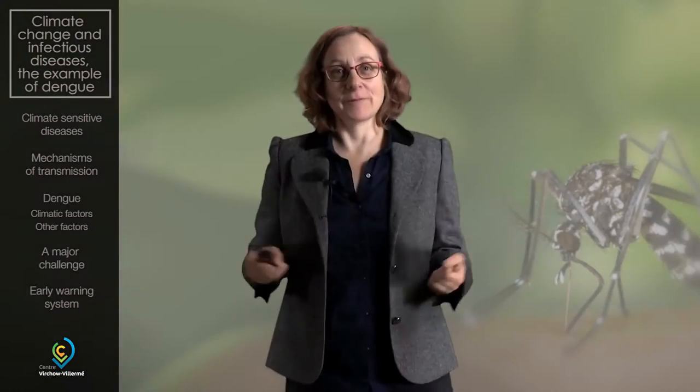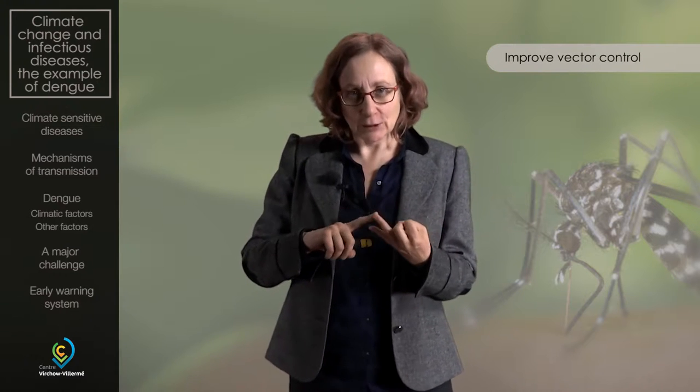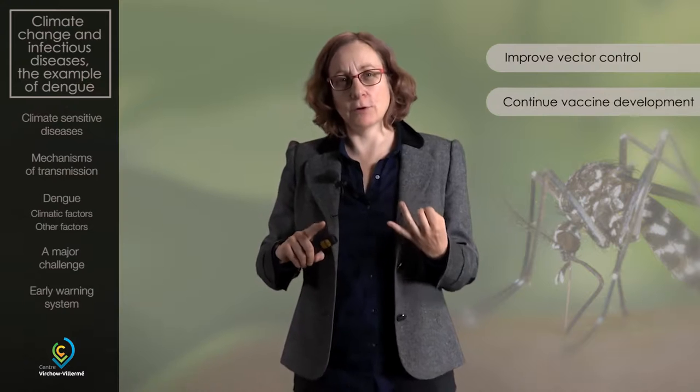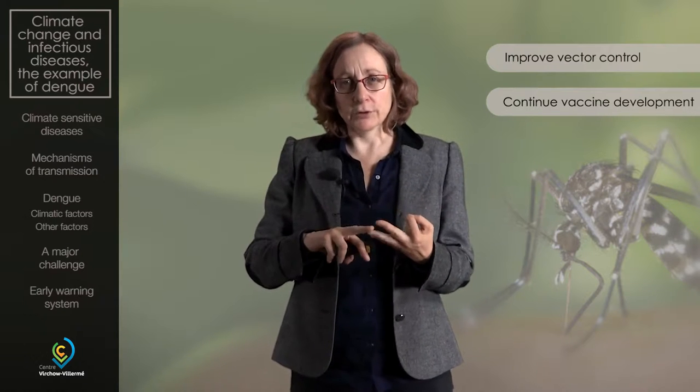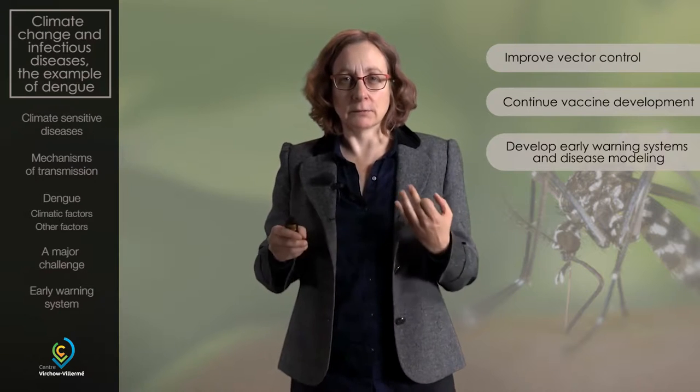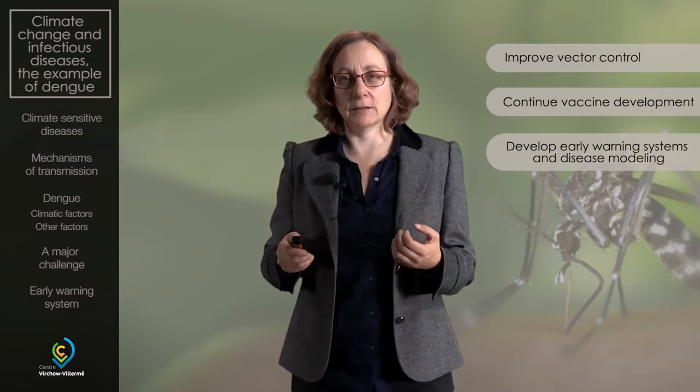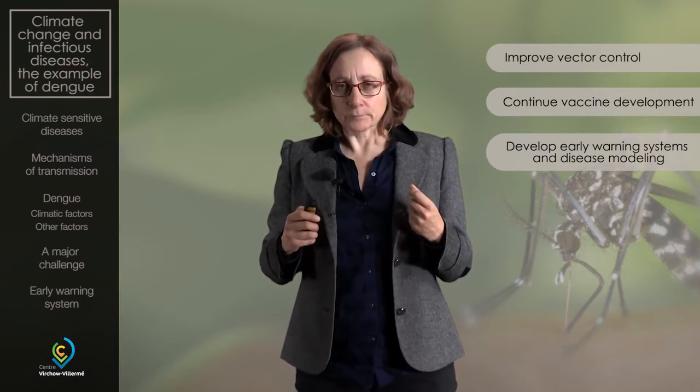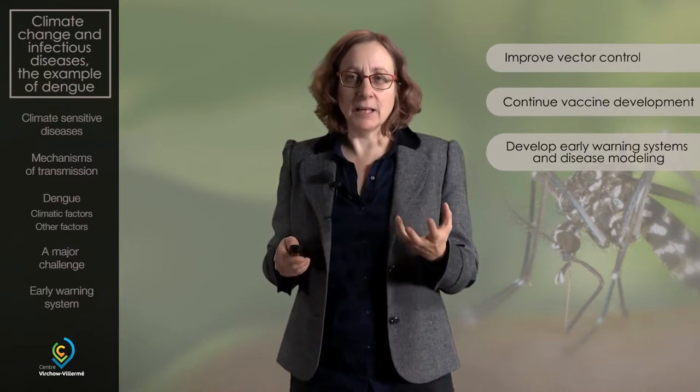In conclusion, how can we adapt to the challenge of dengue in the 21st century? We can continue to improve vector control, continue to look for vaccines, and develop new tools such as early warning systems based on the modeling of climatic factors. Dengue provides a good example of other climate-sensitive diseases which we will have to face in relation to climate change and to which we have to respond and adapt in the 21st century.